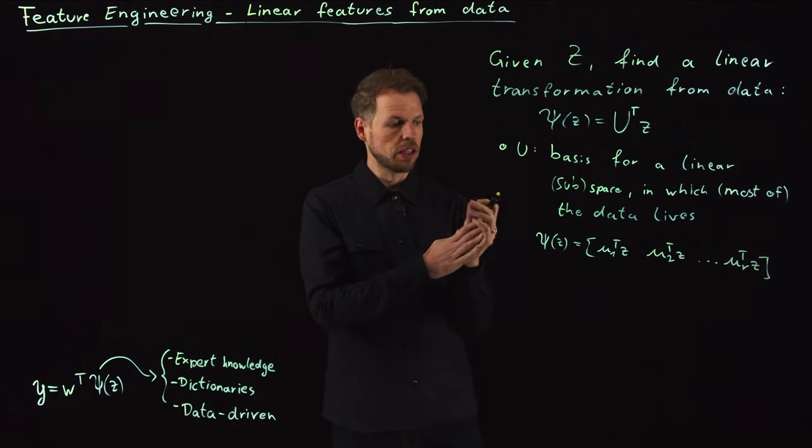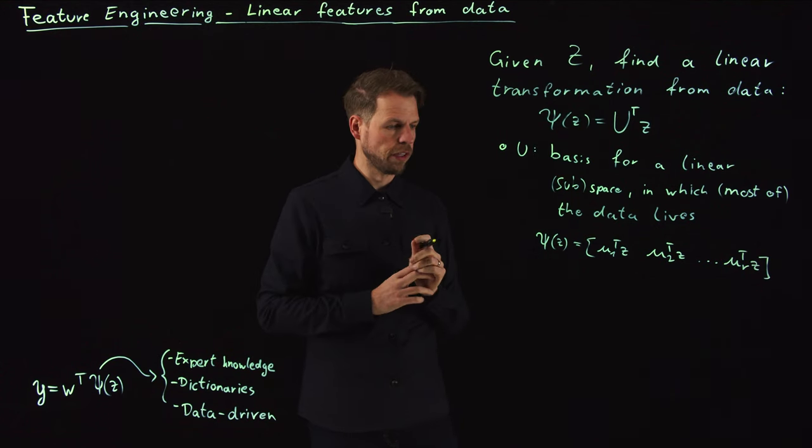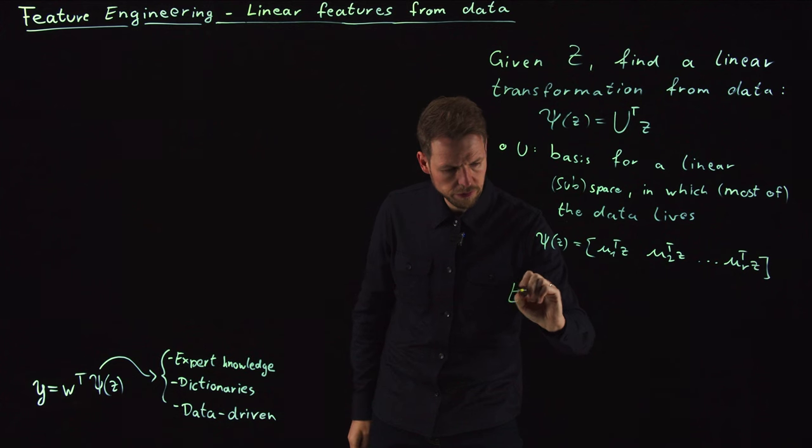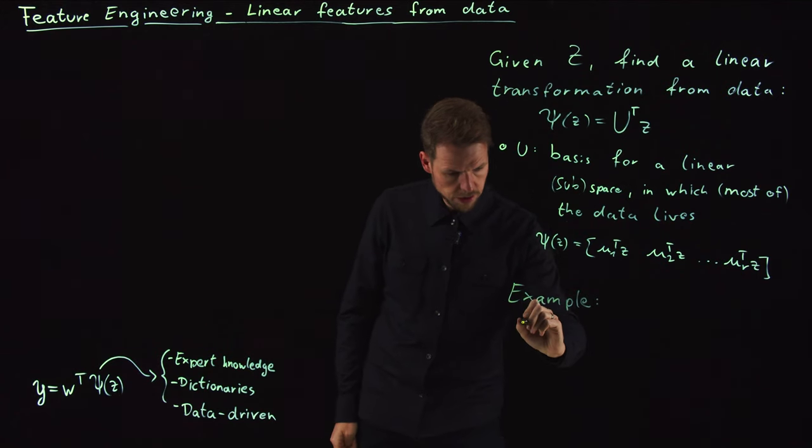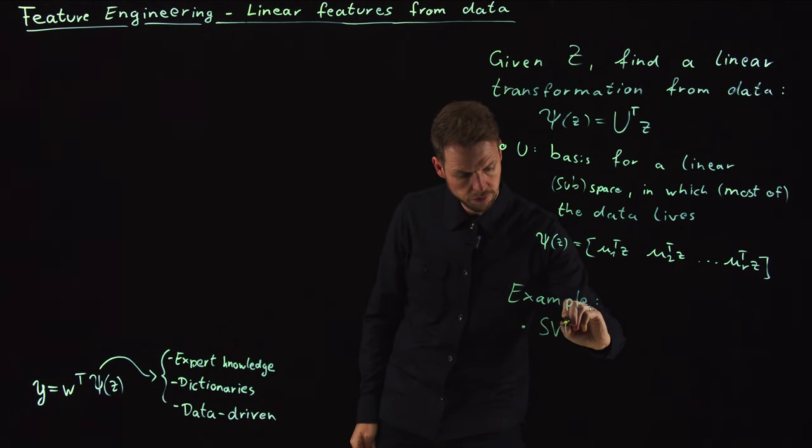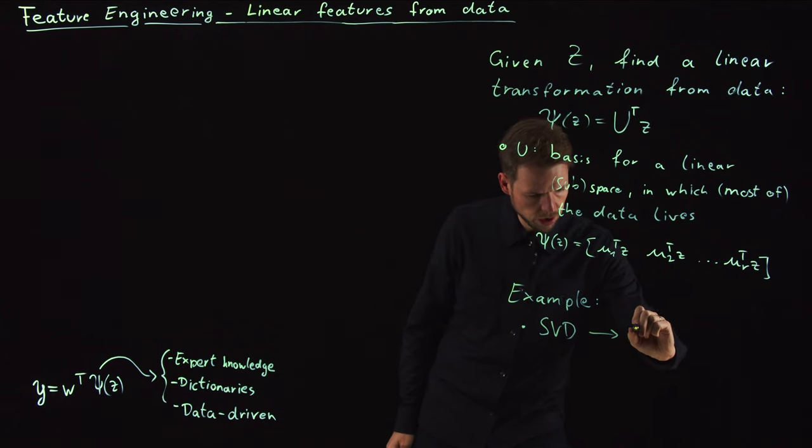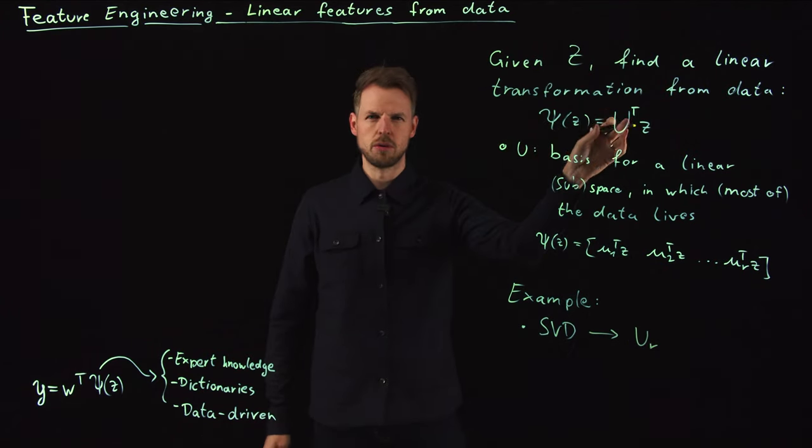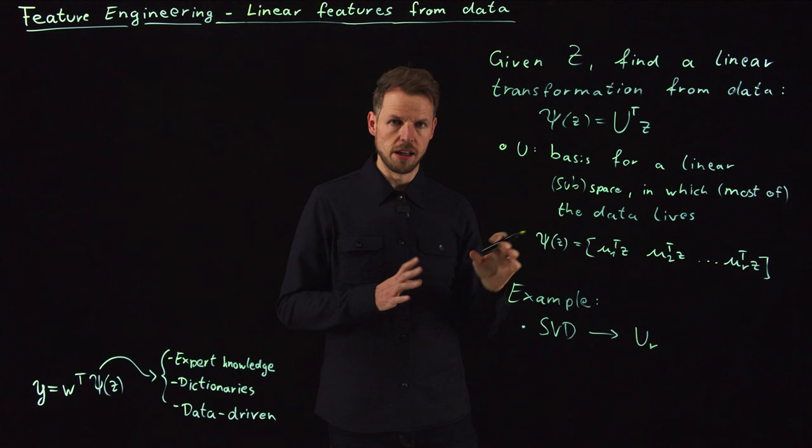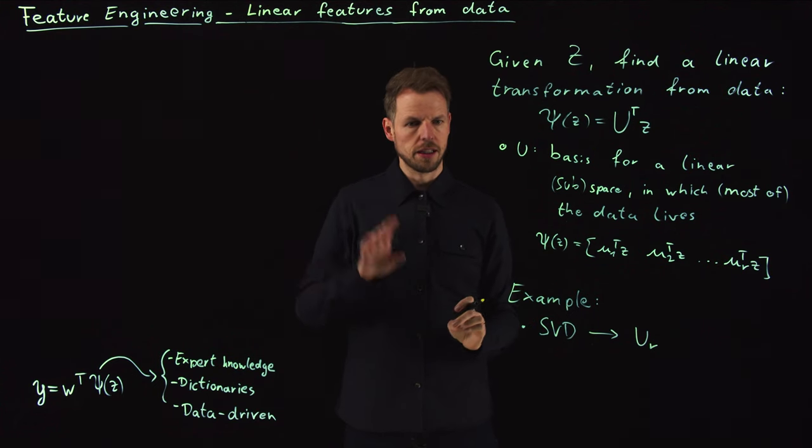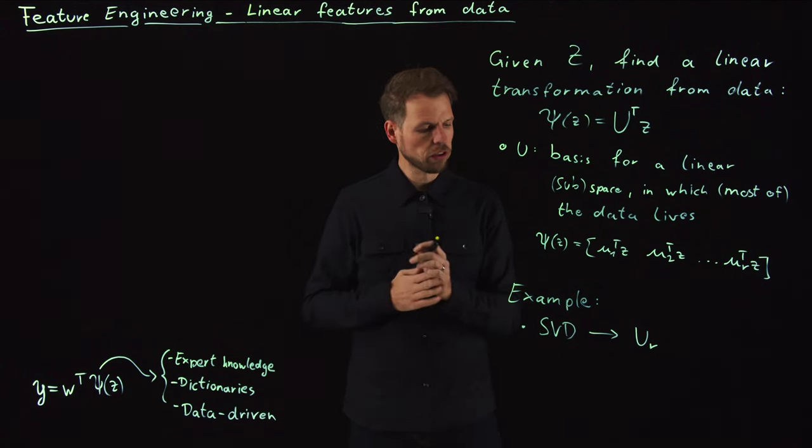An example that we can use, and that I will also use in the code in a second, is to use the singular value decomposition to identify these features. So the example is to take the singular value decomposition, and then you take the first r columns of your U matrix. Remember this was a decomposition into a U matrix, a sigma matrix, and the V matrix.